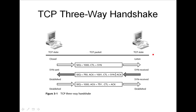Here's what happens with the three-way handshake. This machine initiates the connection attempt and this is the one that receives. To initiate the three-way handshake, the first machine is going to send a packet to the receiving machine with the SYN flag set. The initiating machine also selects a sequence number.